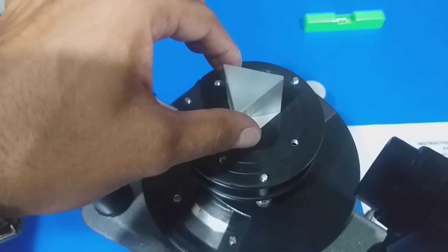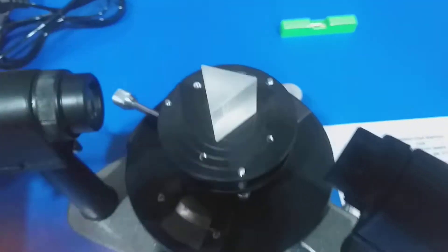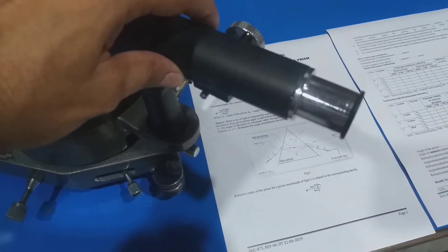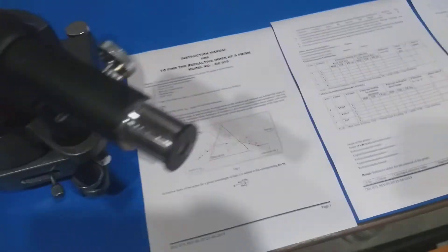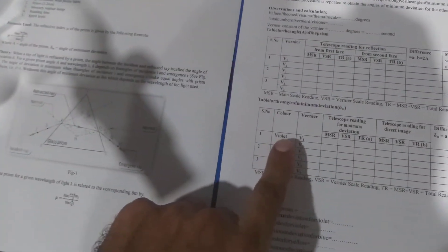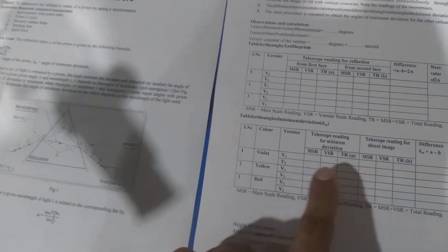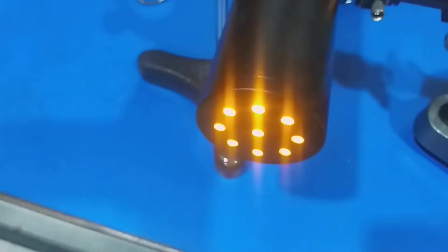We obtain the spectrum opposite to the rough face and we calculate the value of angle of minimum deviation for yellow color in sodium light.